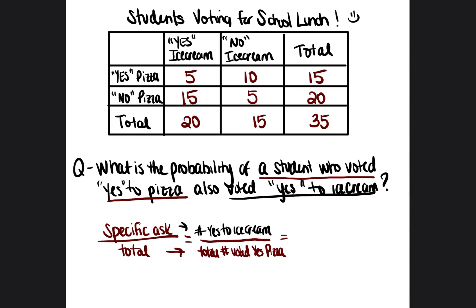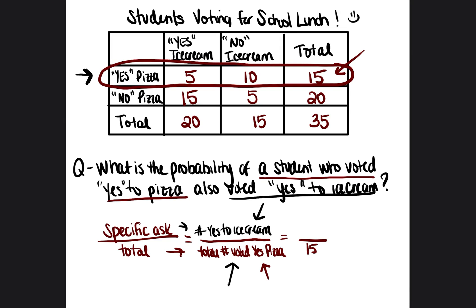Now we know what numbers go on the top and bottom, so let's look at the chart. The total number of students who voted yes to pizza — if you look at the row on the left side labeled yes to pizza — the total across that row is 15. So 15 goes on the bottom. Out of those students, we're finding how many also voted yes to ice cream. Yes to ice cream is the first column, and that value is 5. So 5 goes on top.